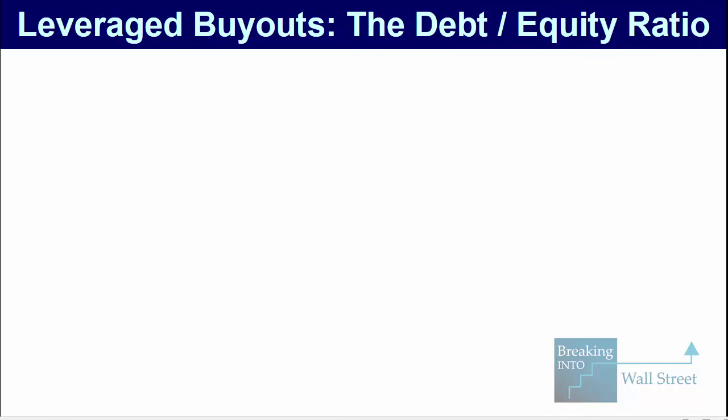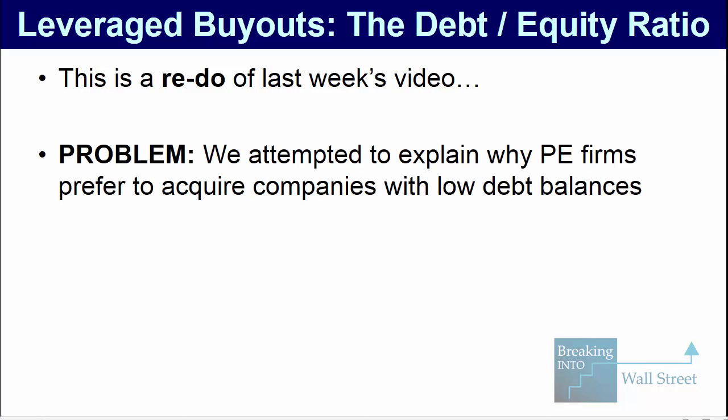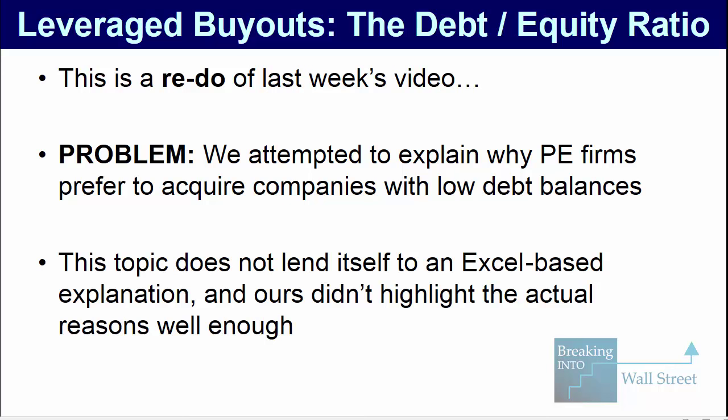Welcome to another tutorial video. This one is actually a redo of last week's video. In case you missed it, we attempted to explain why private equity firms prefer to acquire companies with low debt balances when they are completing leveraged buyouts. The problem is that topic doesn't really lend itself to an Excel-based explanation, at least not a simple one. And ours was a little bit confusing.